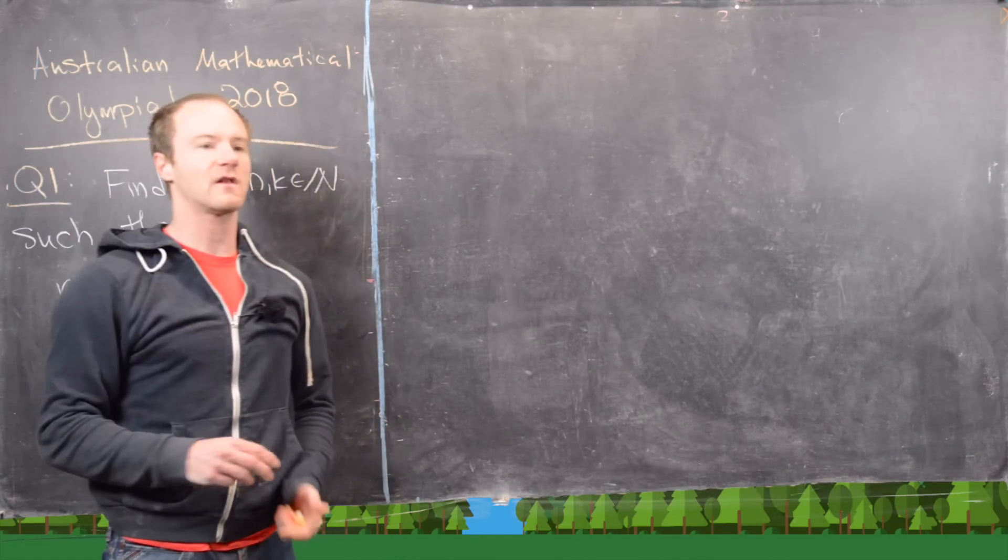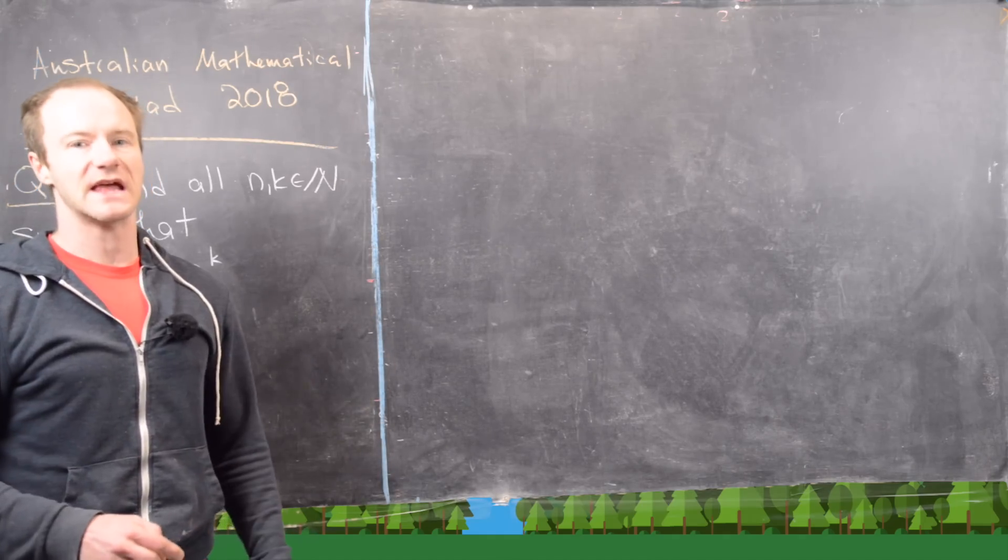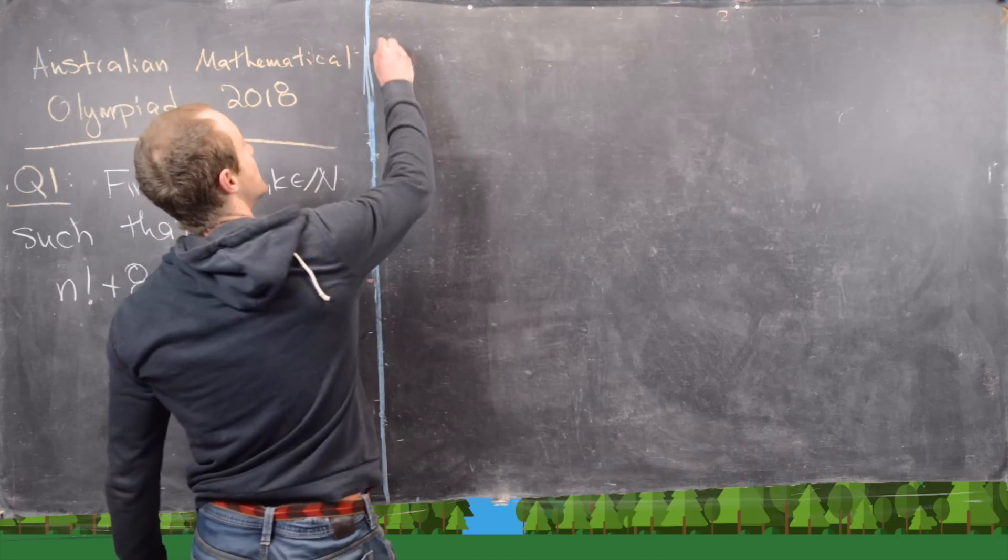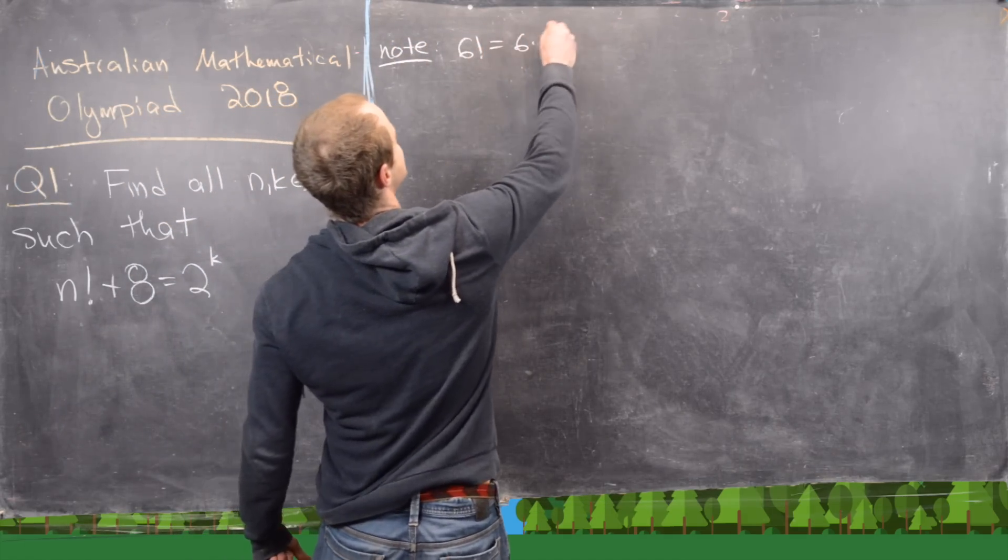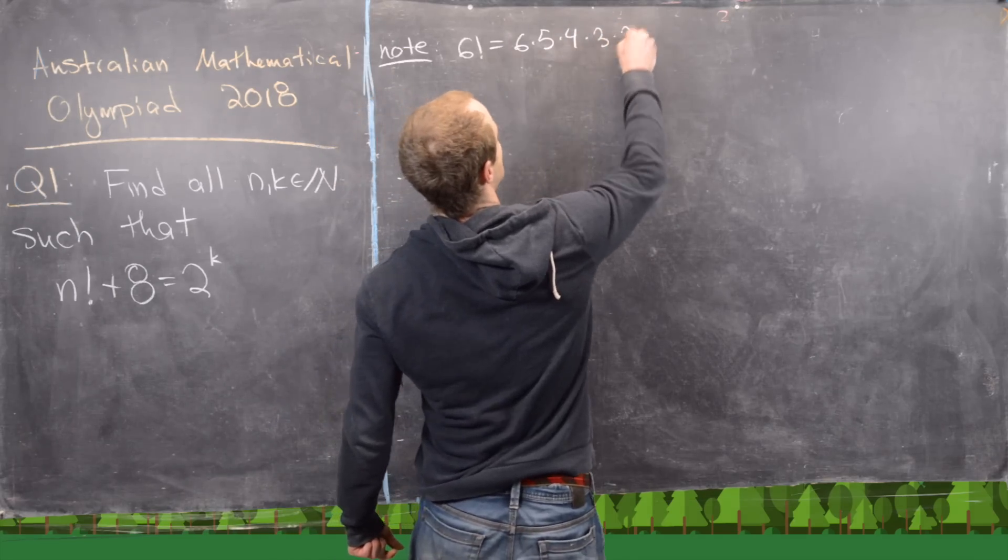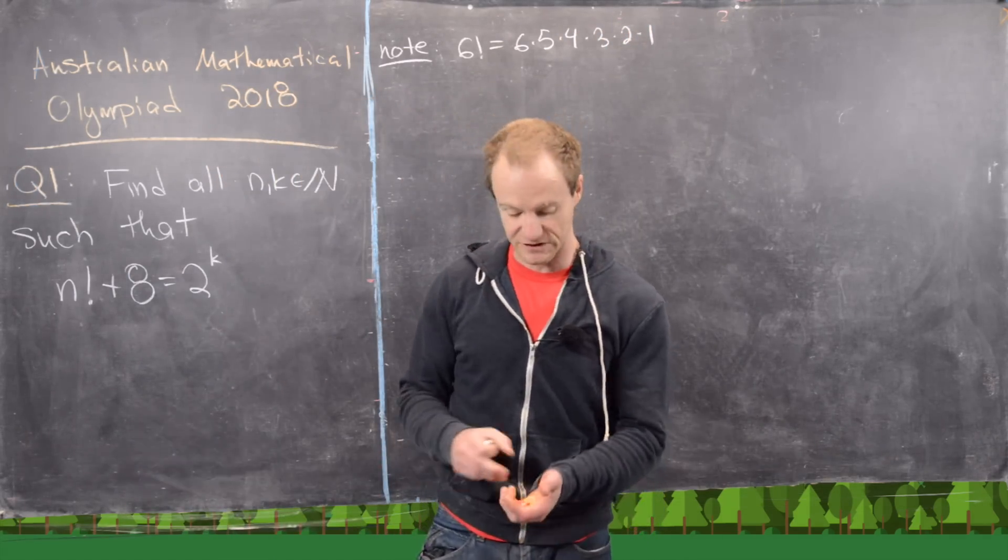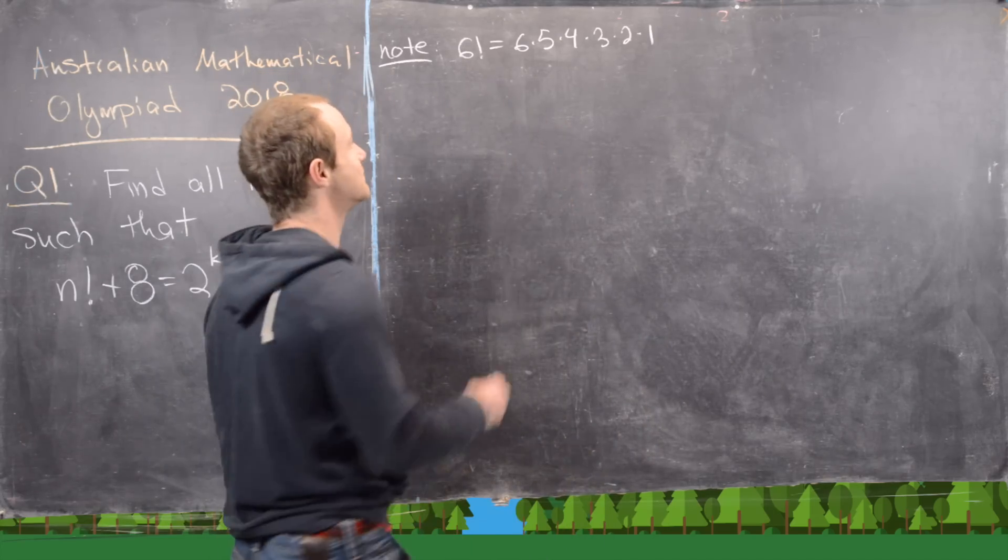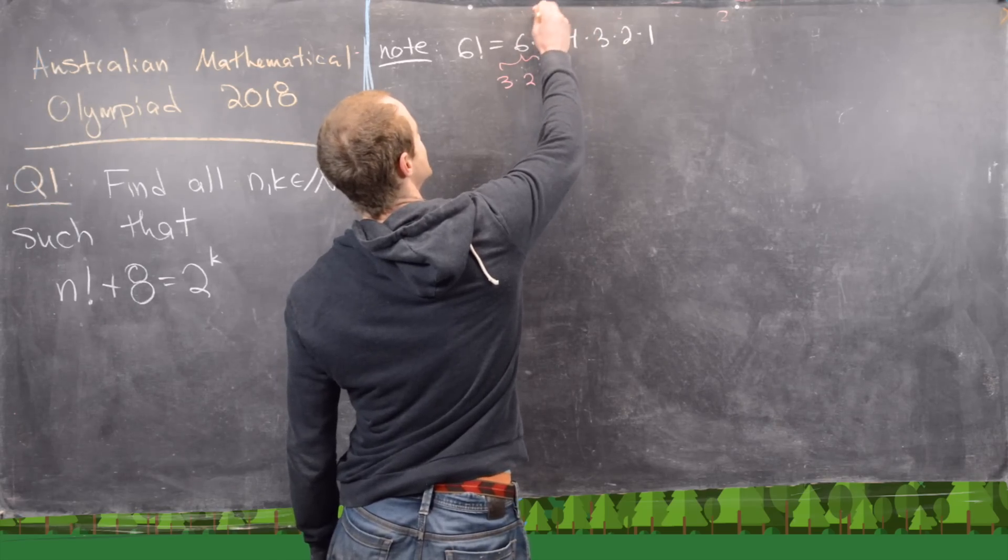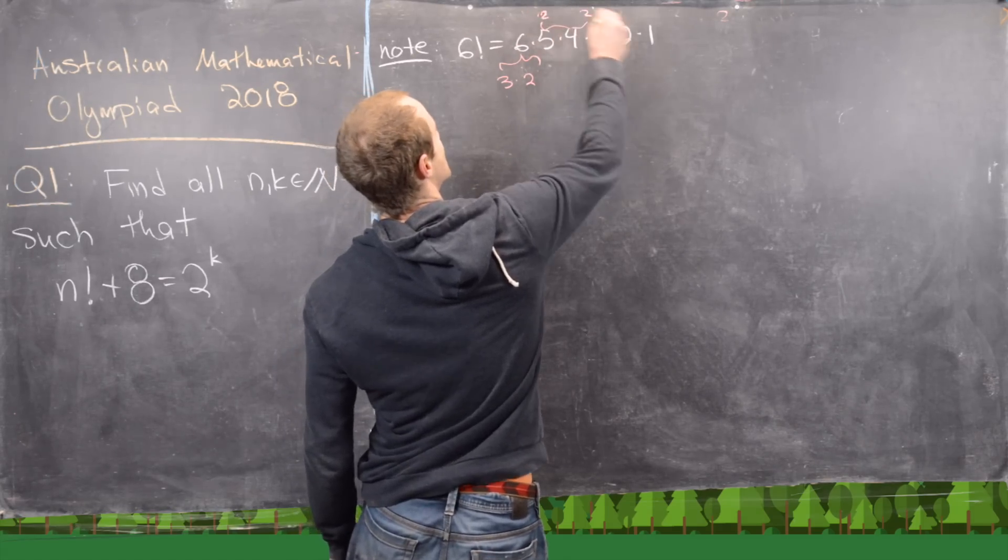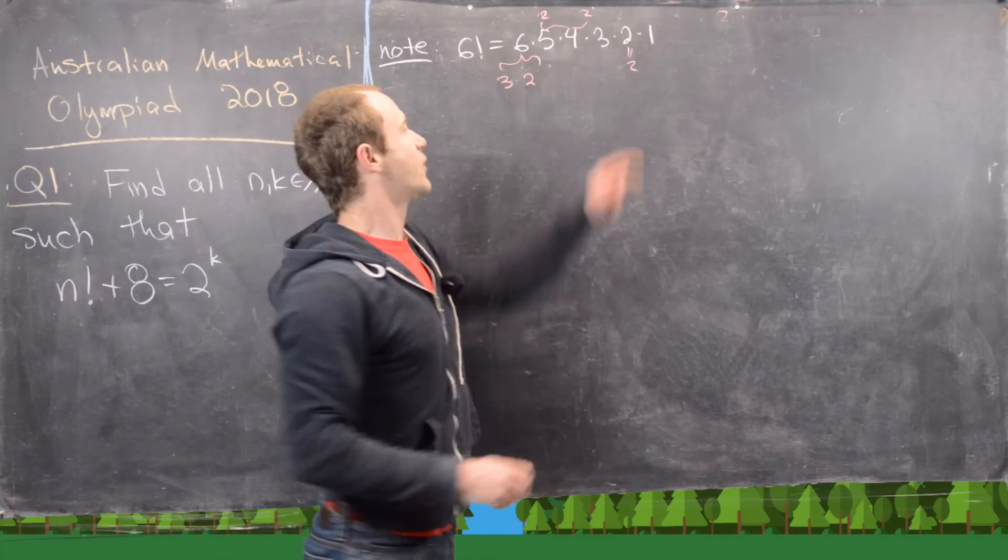Like we pointed out, we want to look for a point where everything after that point is the same. And so that point will actually be n equals 6. Notice that 6 factorial equals 6 times 5 times 4 times 3 times 2 times 1. And then since we're interested in these kind of things being powers of 2, let's go ahead and decompose all of the 2's out of it. So this is equal to 3 times 2. This guy is equal to 2 times 2. And then this guy is equal to 2. So all in all, we have 1, 2, 3, 4, 2's,